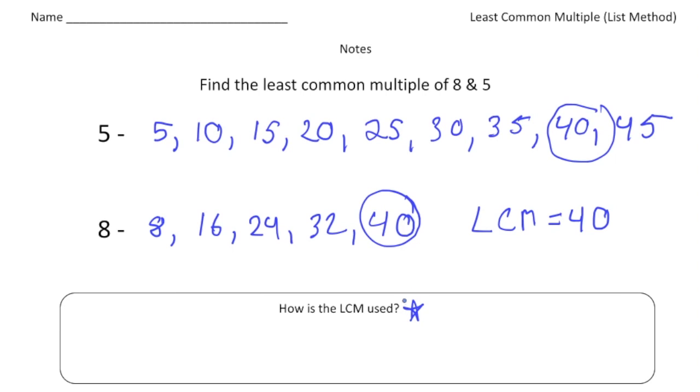Let's put a star right here. Now, how exactly is the least common multiple used? The least common multiple is used when you add fractions because the least common multiple is often going to be the new denominator when you add fractions.